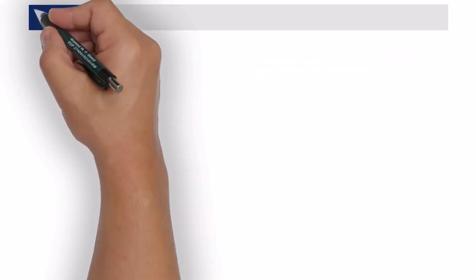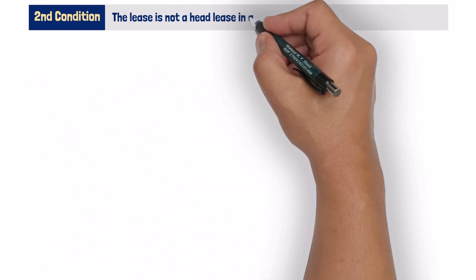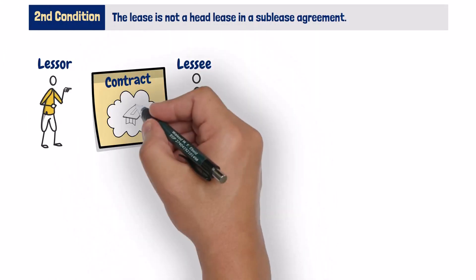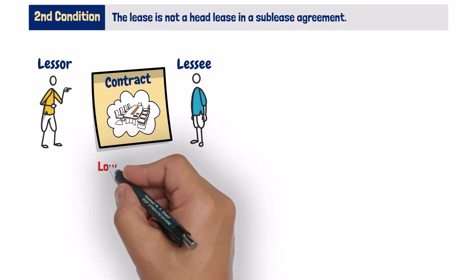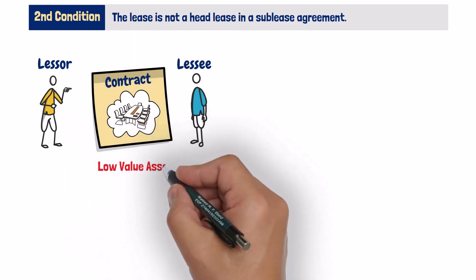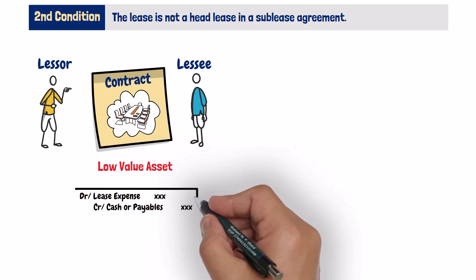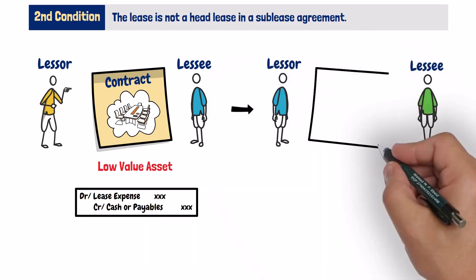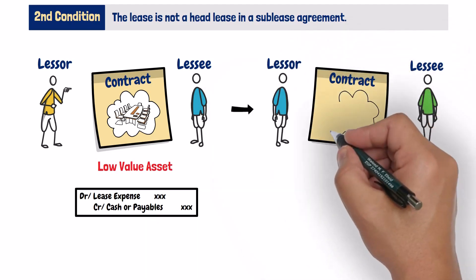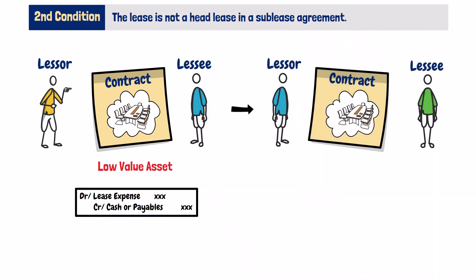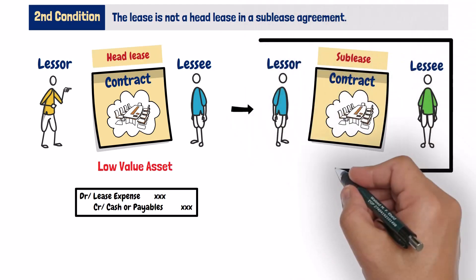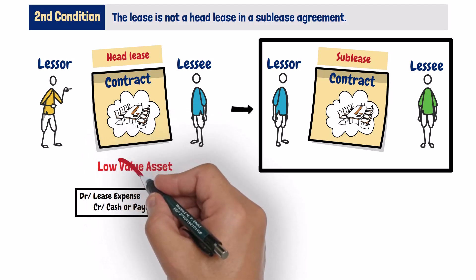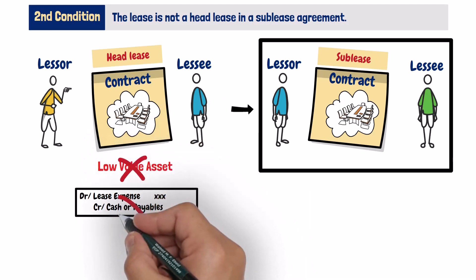The second condition: the lease is not a head lease in a sublease agreement. If a lessee leases an asset that qualifies as a low value asset and elects to apply the exemption, recording lease payments as expenses, but later during the lease term subleases that asset to a third party — the standard states that if a lessee subleases or expects to sublease a leased asset, then the head lease of that asset cannot qualify as a lease of a low value asset.